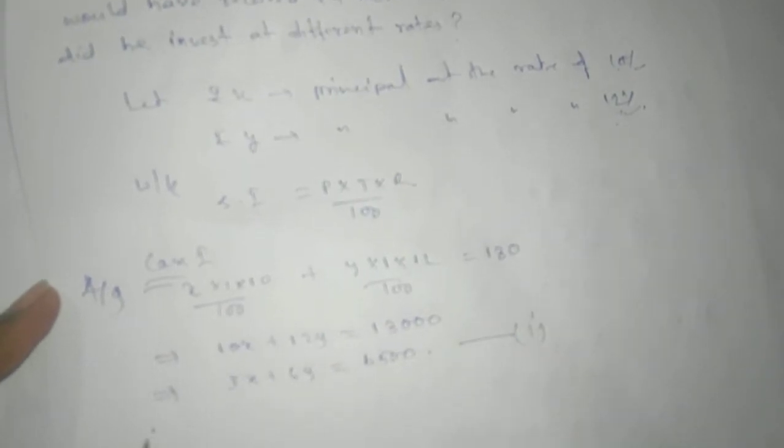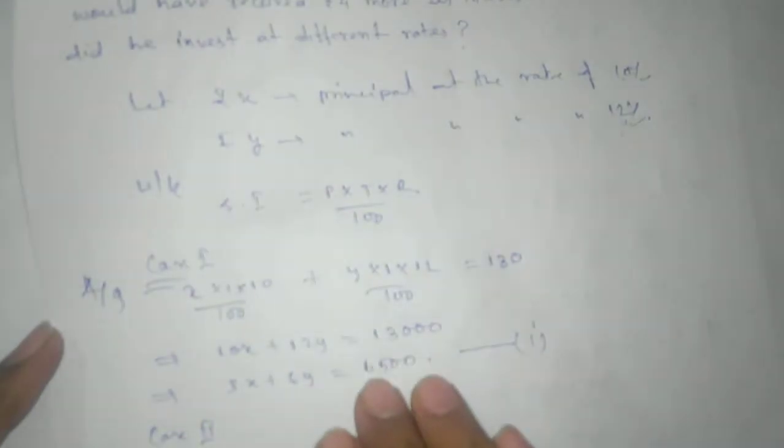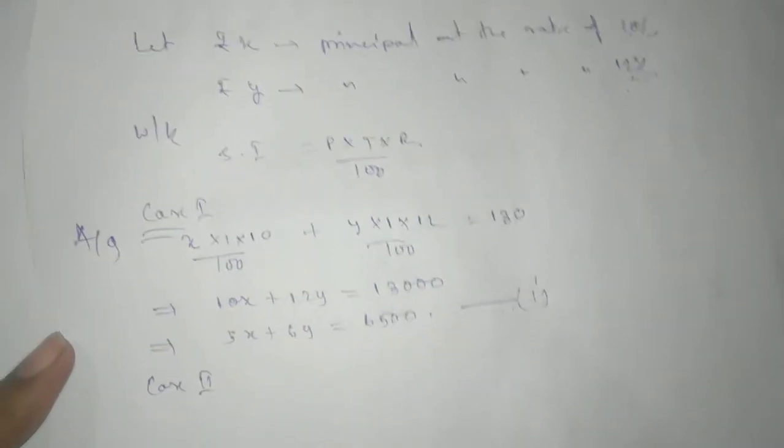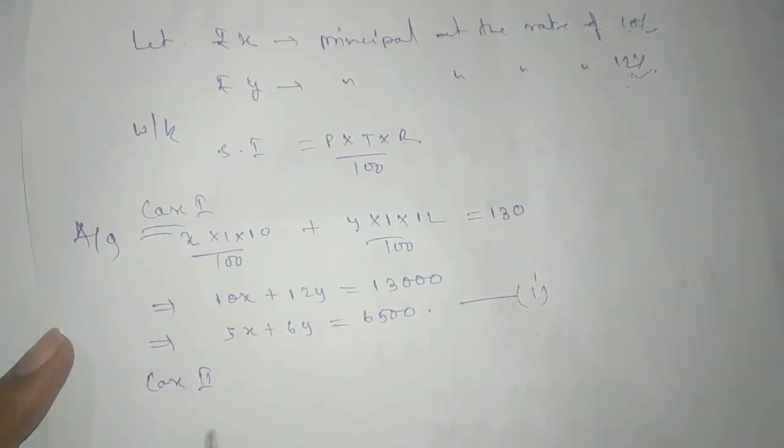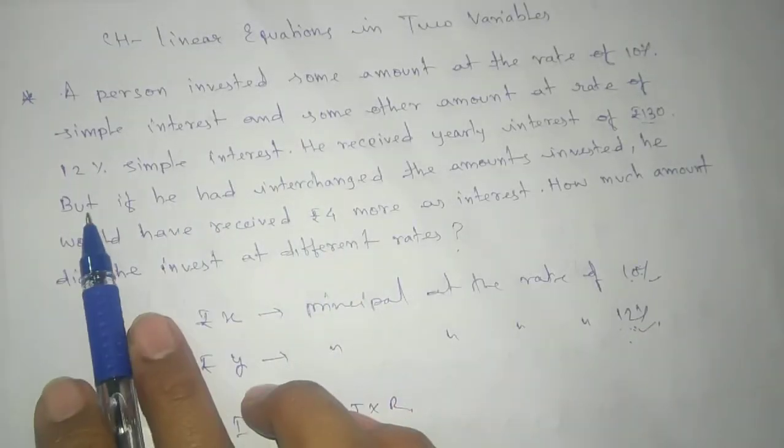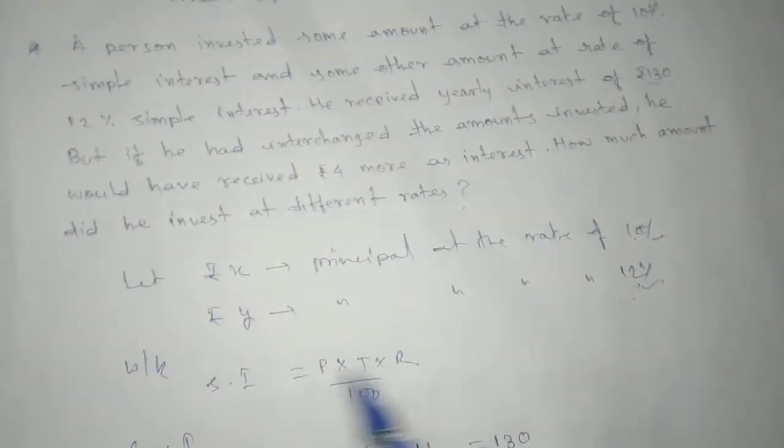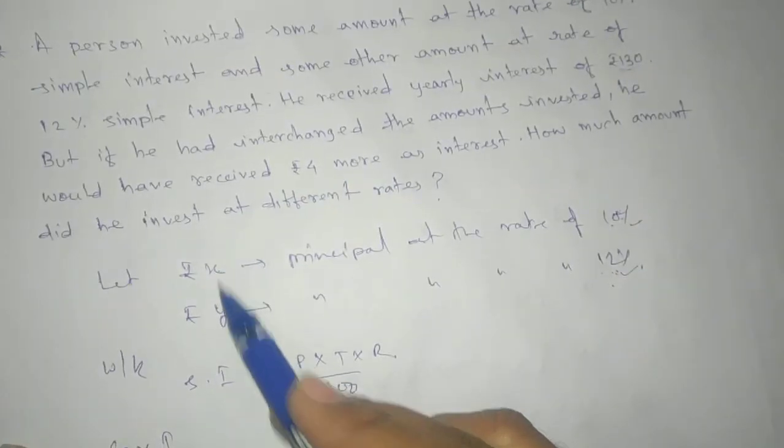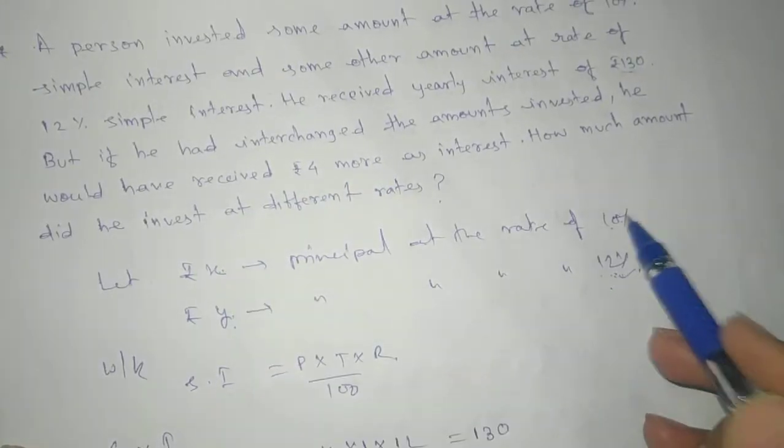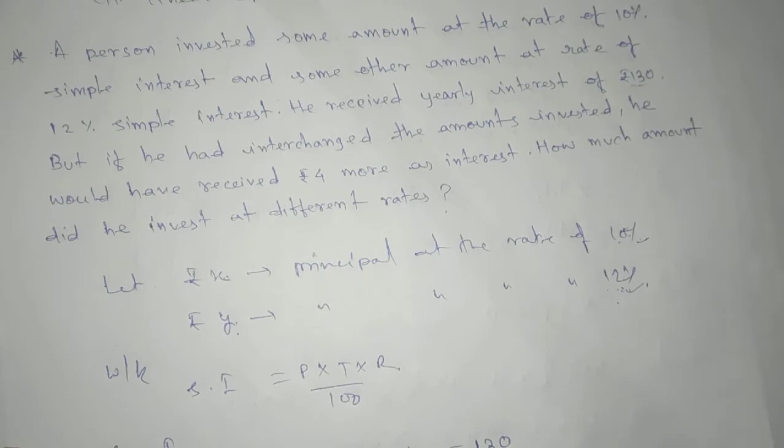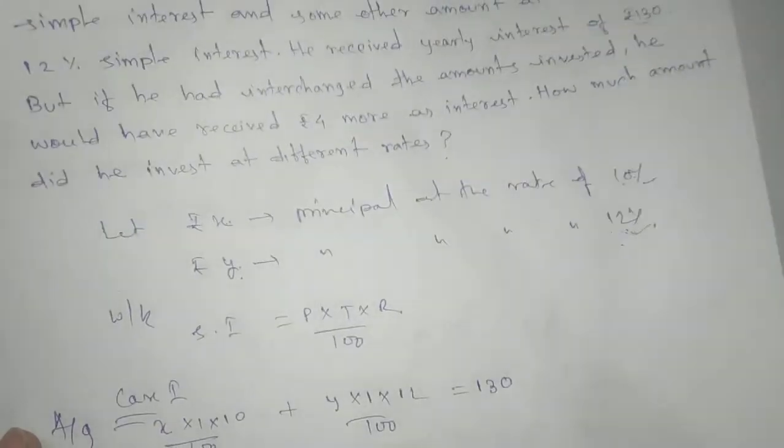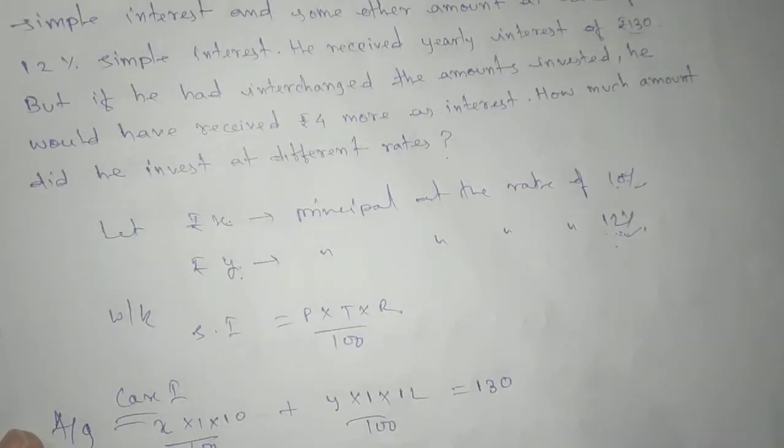Now for case two: if he had interchanged the amount, that means x will be here and y will be here. Rate will be that - y rupees at 10% and x rupees at 12%.